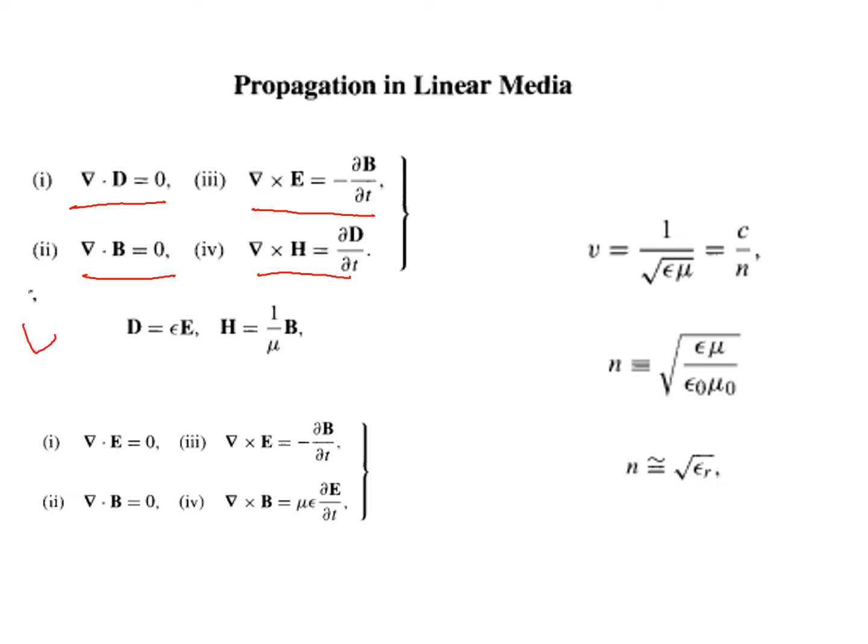But for linear media, D equal to epsilon E and H equal to 1 by mu times B. So in the case of linear media, if any of these parameters are known — like if you know the value of B, you can calculate H. Using this, we can write the equations for a linear medium.